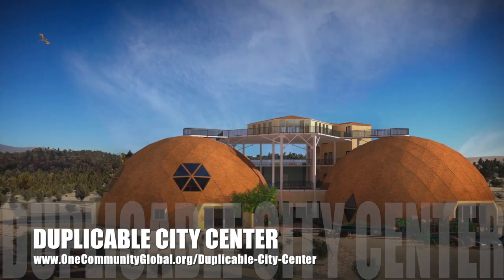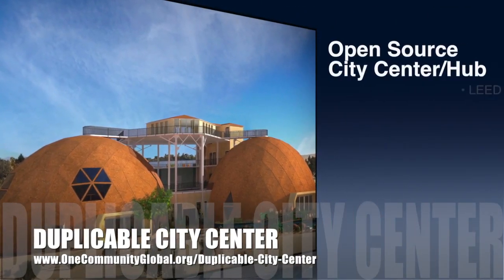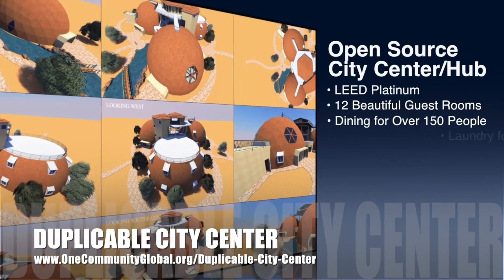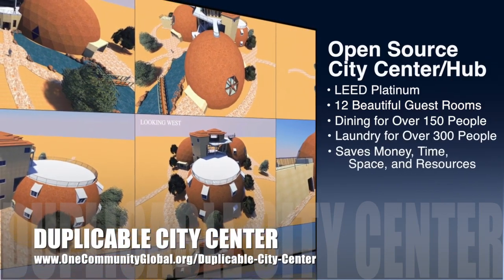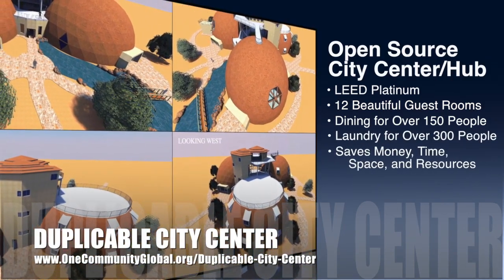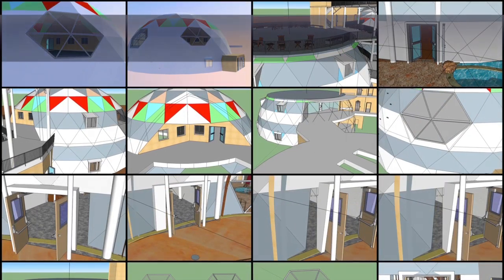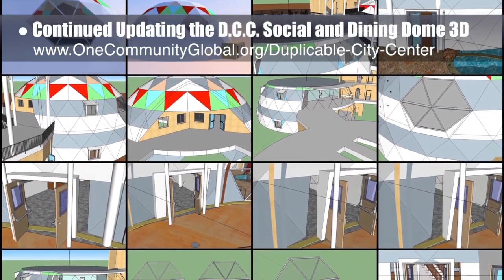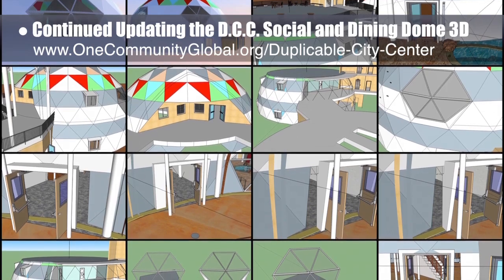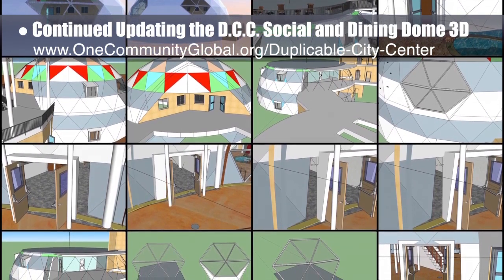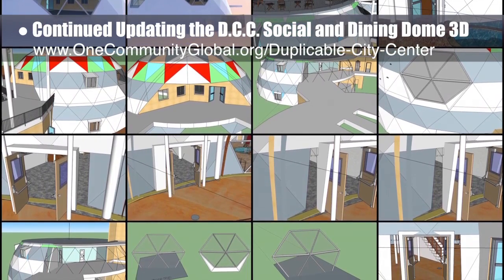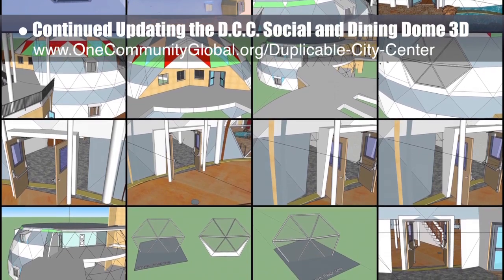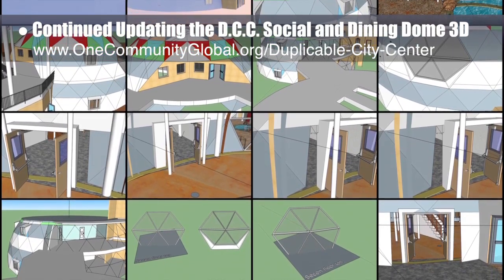One Community is also creating an open source duplicable city center. It is designed to be LEED Platinum certified, provide 12 guest rooms, dining for over 150 people, and laundry and recreation space for over 300 people, all while saving money, time, space, and resources. This week the core team continued working on the SketchUp duplicable city center updates for the social dome and the dining dome — changing door opening directions where needed, updating windows on the dining dome second floor, raising the sunrise patio deck, redesigning the hexagon windows, redesigning the laundry room door frame details, and updating the social dome shell to accommodate the pedestrian door connecting the inside and outside swimming pool area. You can see some of these details here.